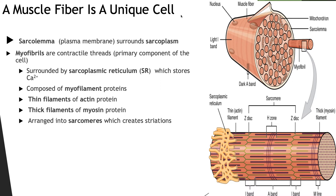Moving to the microscopic anatomy of skeletal muscle: the cytoplasm of a muscle cell is called the sarcoplasm. The sarcoplasm of skeletal muscle contains more mitochondria than the average body cell and large amounts of myoglobin, which is a protein involved in the storage of oxygen. The plasma membrane of this muscle cell is called the sarcolemma, and the sarcolemma possesses numerous invaginations that extend deep into the sarcoplasm at right angles to the cell surface. These invaginations are called transverse tubules, or T-tubules. The T-tubules form passageways through the muscle cells that allow electrical impulses generated at the surface of the cell to travel into the cell's interior.